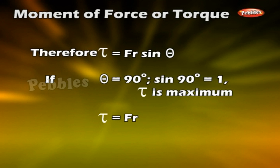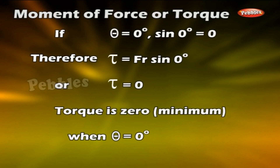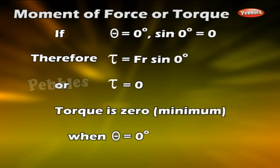If θ = 90°, then sin 90° = 1, and torque is maximum: torque = FR. If θ = 0°, then sin 0° = 0, and therefore torque = FR sin 0° = 0. Torque is minimum (zero) when θ = 0°.